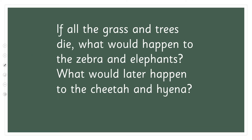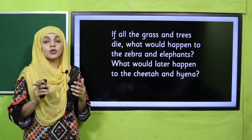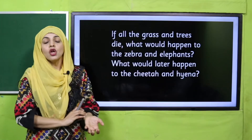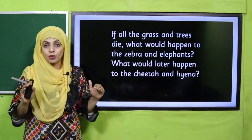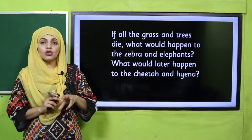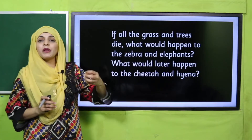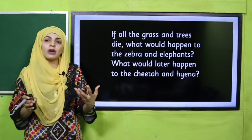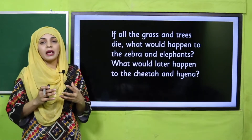If all the grass and trees die, what would happen to the zebras and elephants? What would later happen to the cheetahs and hyenas? Elephants and zebras were feeding on trees, and hyenas and cheetahs — which are meat-eaters — were feeding on plant-eating animals. If plants are all finished and they die, there will be no elephants and zebras. Then what will happen to cheetahs and hyenas? Obviously, if there are no plants there will be no primary consumers, and if there are no primary consumers there will be no secondary consumers or carnivores. In this way, everything is connected in a balance in food chains.